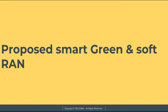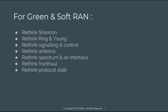For green and soft radio access network, we have some proposed things. What are the parameters that we have to rethink? These are: Shannon, Ring and Young, signaling and control, antenna, spectrum and air interface, fronthaul, and protocol stack.